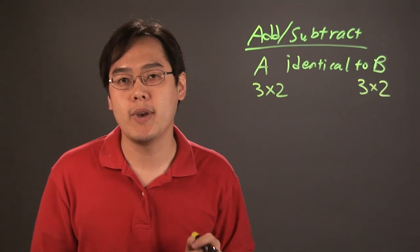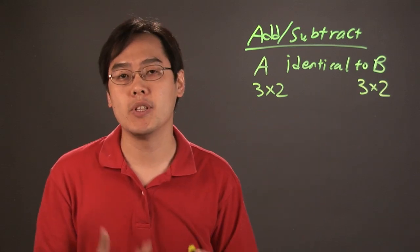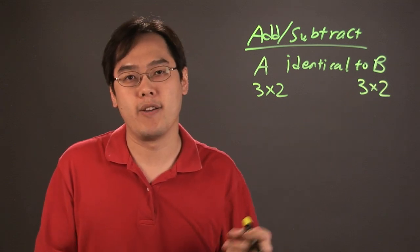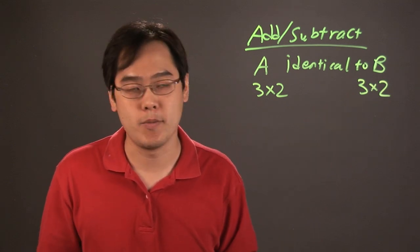You cannot add and subtract matrices of different shapes. They have to be the same structure. You can't subtract a 3 by 2 by a 2 by 4. The structures of both matrices have to be the same.